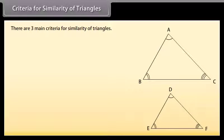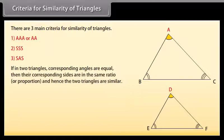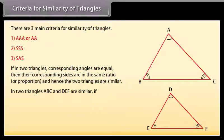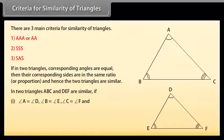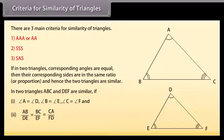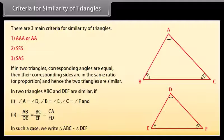There are three main criteria for similarity of triangles. If in two triangles the corresponding angles are equal, then their corresponding sides are proportional, that is, in the same ratio, and hence the triangles are similar. In two triangles ABC and DEF: one, angle A equals angle D, angle B equals angle E, angle C equals angle F; and two, AB upon DE equals BC upon EF equals CA upon FD. In such a case, we write triangle ABC is similar to triangle DEF.